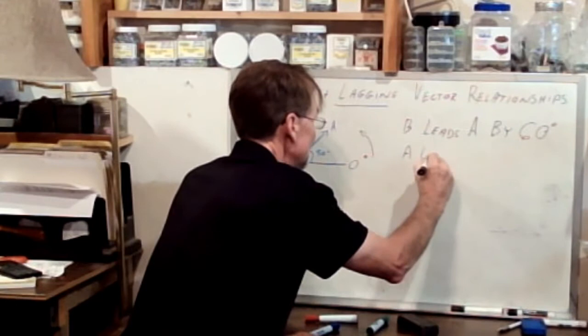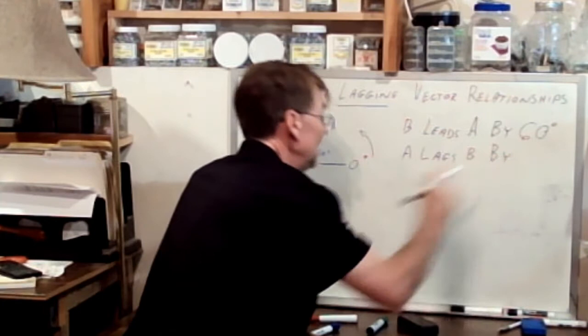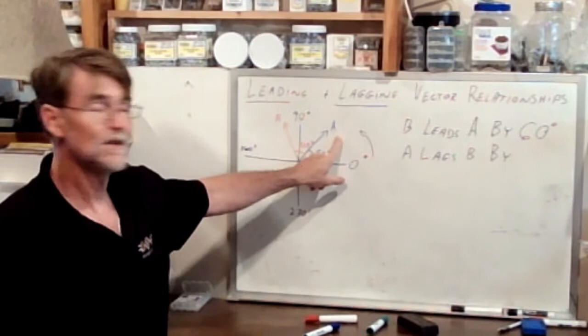We could also say that A lags B by how much? This is the race, B is winning, A is losing. A lags behind B by how much? That same 60 degrees.